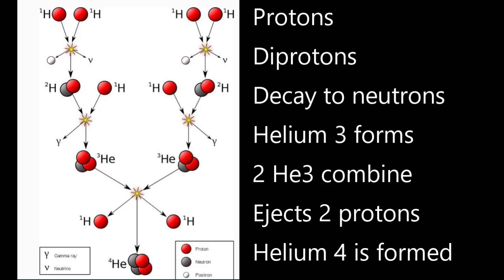What actually happens is that two protons bind together to become a diproton. About one in ten octillion times, one of these diprotons decays into a neutron. This deuterium nucleus binds with another proton to become helium-3. Two helium-3 nuclei bind together to form helium-4 and eject two protons.